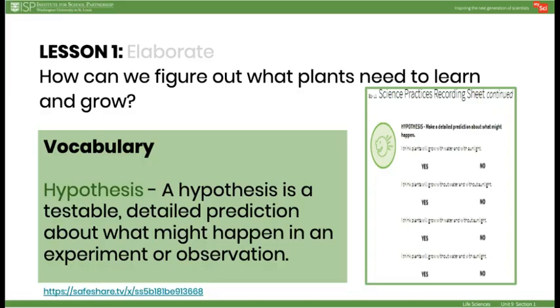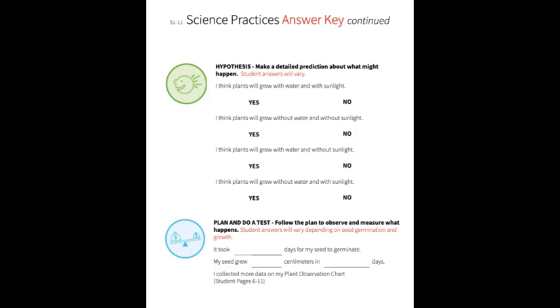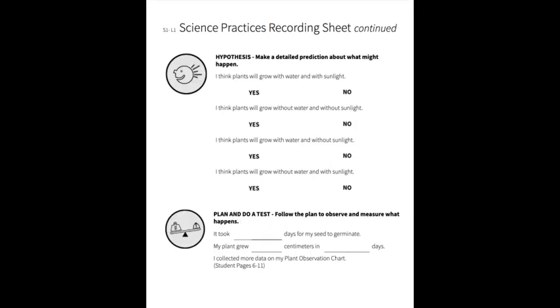In the Elaborate, introduce the vocabulary term hypothesis as a testable, detailed prediction scientists make about what might happen in an experiment or observation. Read through each hypothesis statement on student page three, having students circle yes or no depending on what they think will happen. After each statement, hold a brief discussion and have students explain their choices. Teacher guidance for these pages can be found on teacher pages 17 to 18. Note that the remaining science practices steps will be completed as the experiment continues in the following lessons.